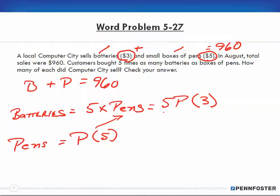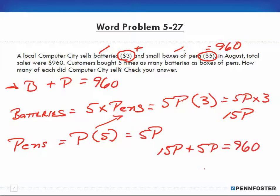That means batteries become 5P because we're replacing the pens with the variable P. However, batteries go for $3 each and pens go for $5 each. Because they're selling the pens and batteries for different amounts, we have to consider that. So our batteries become 5P times $3, which is 15P. And P times $5 equals 5P. Now we can plug those back into our original equation. Our batteries are 15P and our pens are 5P.